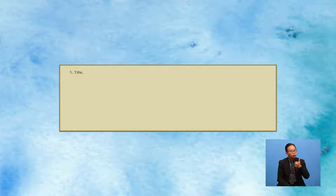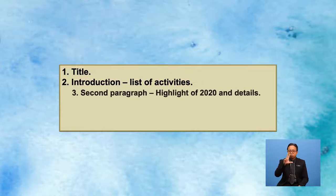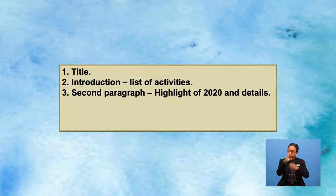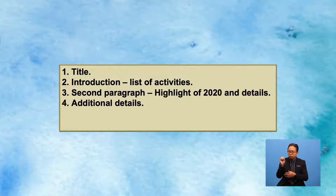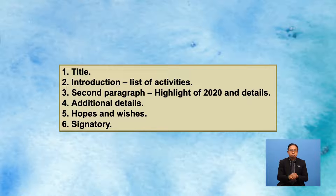Let us recap what goes into this report. 1. Title. 2. Introduction — list of activities. 3. Second paragraph — highlight of 2020 and details. 4. Additional details. 5. Hopes and wishes. 6. Signatory — Reported by, Signature, Name, Position.